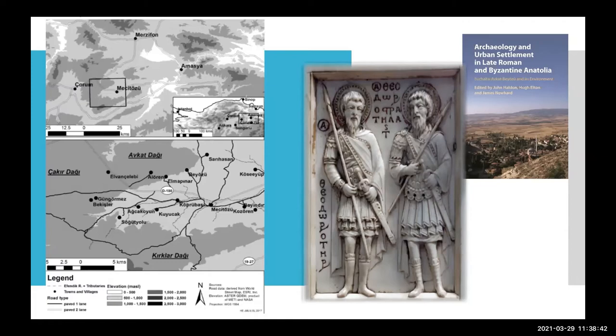AFKAT is probably best known for being the center of the devotion to Saint Theodore the Recruit, and later his big brother Saint Theodore the General — you can see him in the 10th century ivory on the slide. AFKAT seems to become more important in the period from the 7th to the 9th or early 10th century because it wasn't far from the new frontier zone and seems to have had a military function, in addition to its status as a metropolitan bishopric and the cult of Saint Theodore and the associated annual fair.